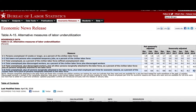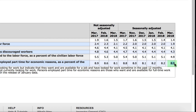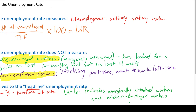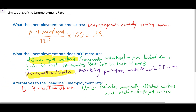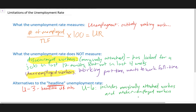Last month in March, the U6 unemployment rate was at 8% compared to the 4% official U3 rate. This 8% represents the percentage of the total labor force plus discouraged workers plus underemployed workers that are either unemployed, discouraged, or underemployed. In this video we introduced a broader measure of unemployment that includes both the marginally attached workers and the underemployed workers, and you now know what limitations the unemployment rate we read about in the newspapers actually has.